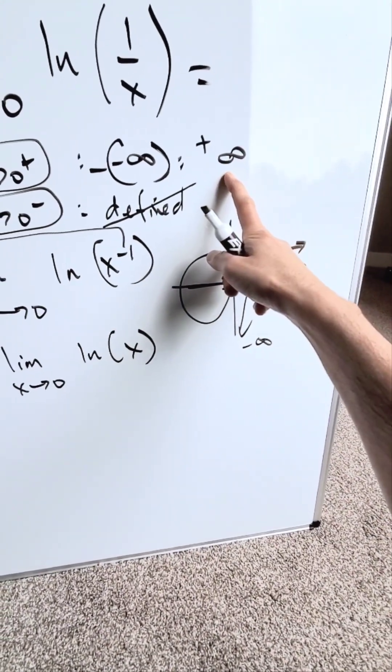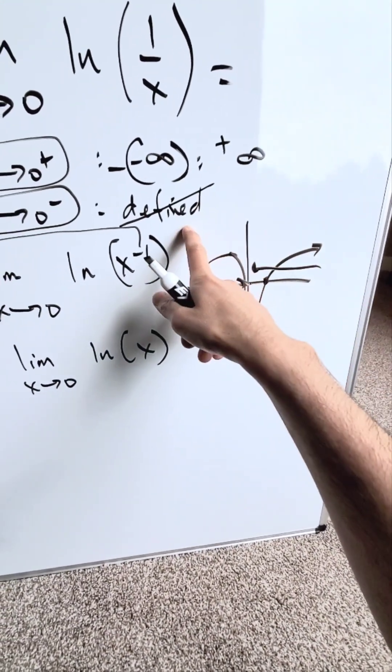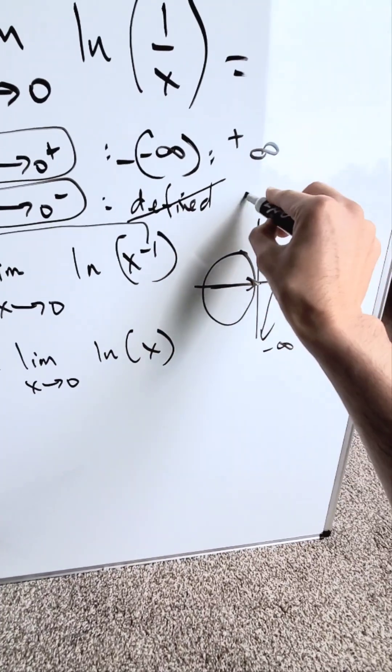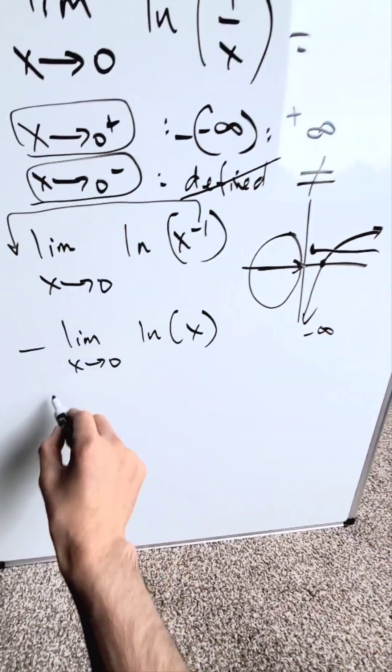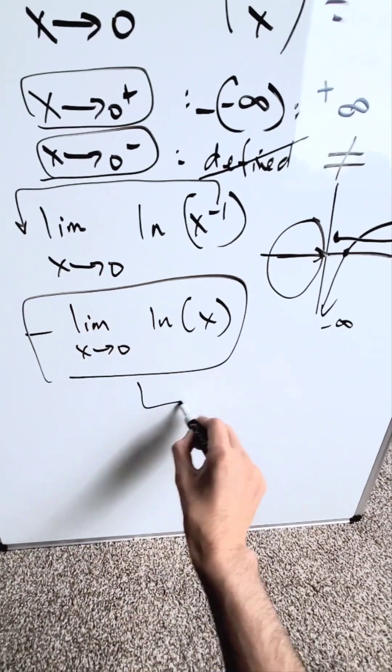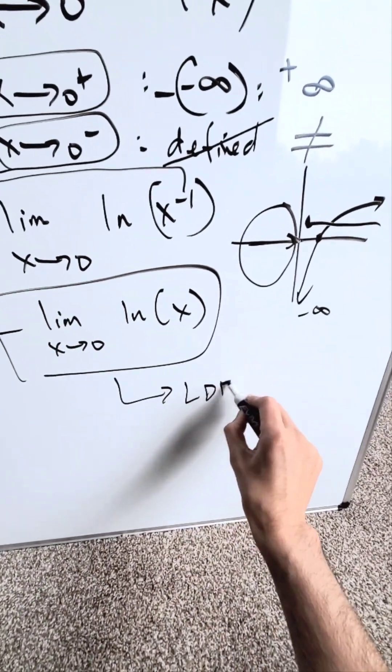I have a right-hand side limit answer equal to positive infinity. Left-hand side is undefined. Both of these sides are not equal to each other. Hence, you know clearly for this limit, your end result should be limit does not exist.